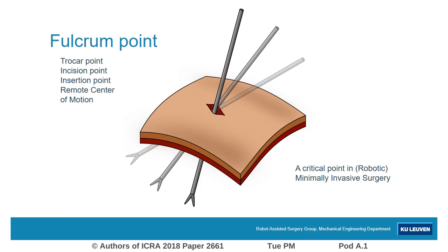The value of knowing this point depends on the application. For instance, the fulcrum point is required for aligning robotic mechanisms, for controlling passive wrist robots, or for initializing instrument segmentation algorithms. So recognizing the value of this point, the topic of this work is on how to estimate it and on how to make optimal use of its properties.